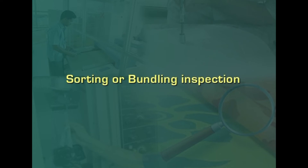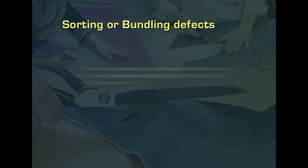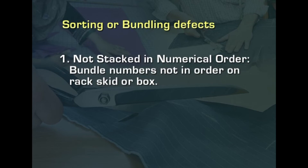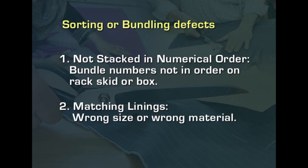Coming to sorting or bundling inspection, it is necessary to check whether numbering, sorting, and bundling are done accurately. Defects found here include: bundles not stacked in numerical order — bundle numbers not in order on the rack or box, making it difficult to pick up and give to operators. Matching linings with wrong size or wrong material being given. These bundling defects result in excessive material handling in the industry, wasting labor time, and should be avoided.